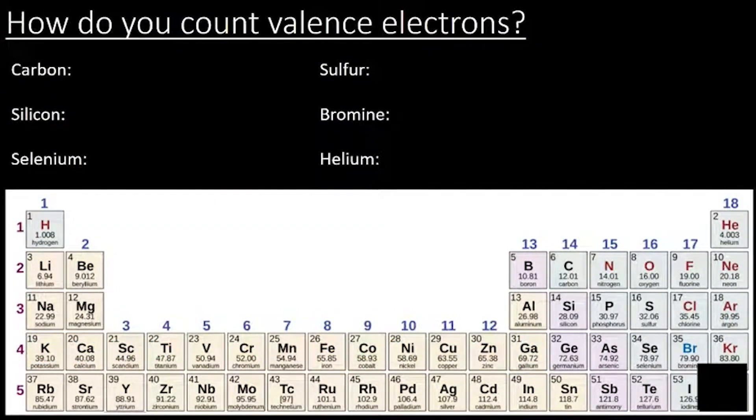Alright, carbon. So carbon is right here, and so I have 1, 2, 3, 4. So 4 valence electrons. 4 outermost electrons that are going to be able to go and bond. Remember, that's what we saw when we looked at hydrogen bonded with carbon.